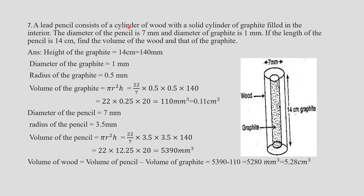A pencil consists of a cylinder of wood with steel graphite filling the interior. The diameter of the pencil is 7 mm and the diameter of the graphite is 1 mm. The length of the pencil is 14 centimeters, which is 140 mm. Volume of the graphite: radius = 1/2 = 0.5 mm. Volume = pi r squared h = 22/7 into 0.5 squared into 140 = 110 mm cube.